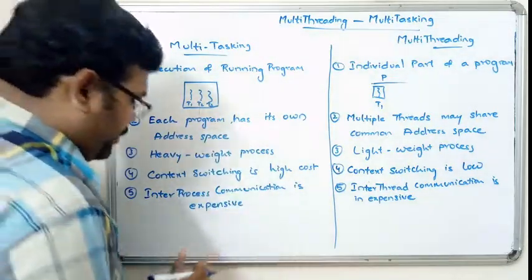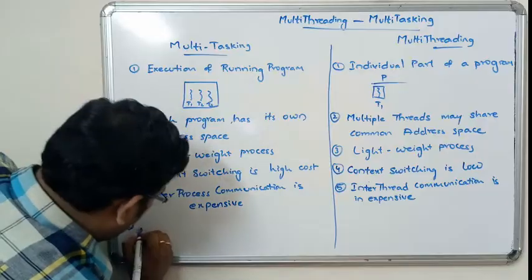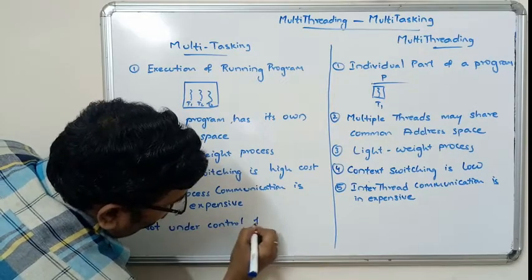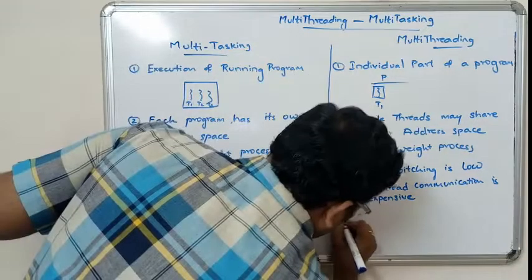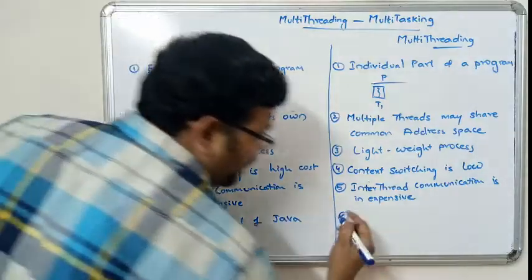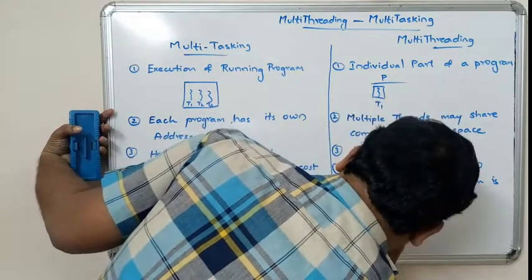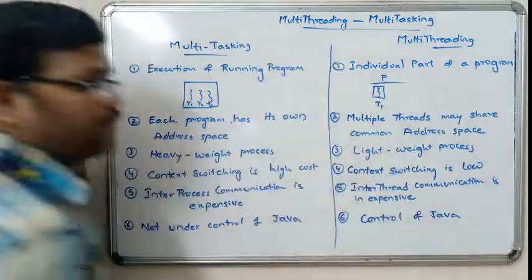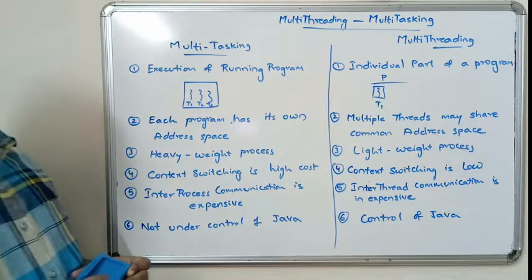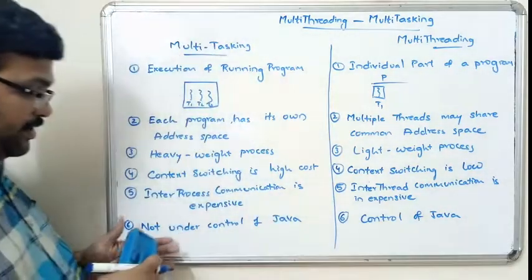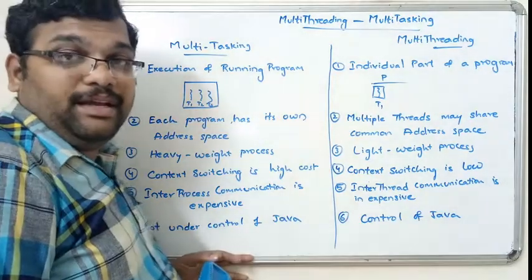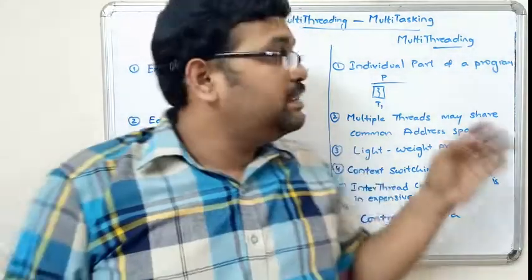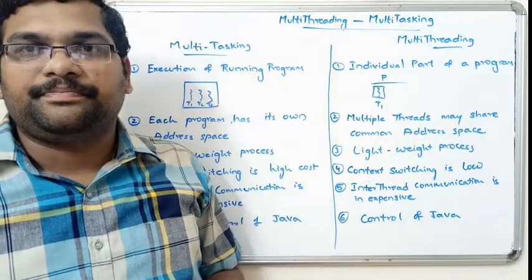Multitasking is not under the control of Java. However, multithreading is under the control of Java — there is a class called Thread that allows Java to manage and control multithreading. So Java supports the multithreading concept, and this is the key difference between multithreading and multitasking.